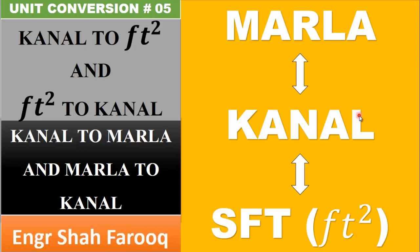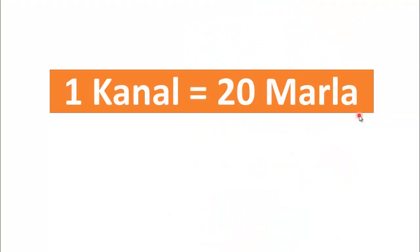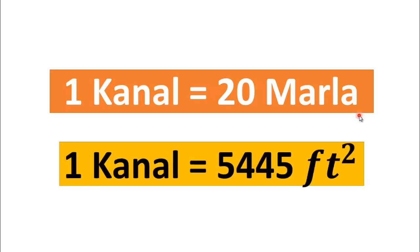We are going to discuss the relationship between canal and Marla, and canal and square feet. One canal is equal to 20 Marla, and one big Marla is equal to 272.25 square feet. Therefore, one canal is equal to 5,445 square feet.